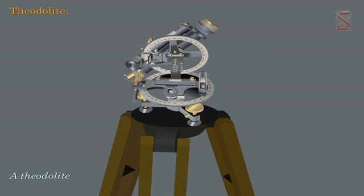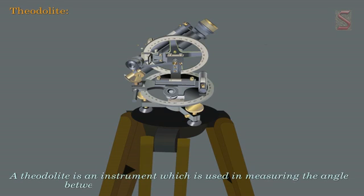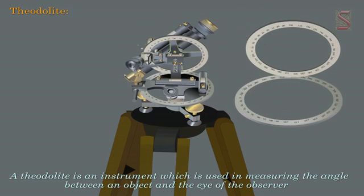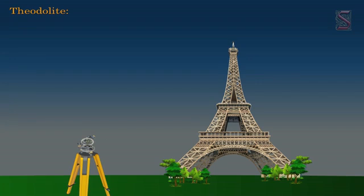A theodolite is an instrument which is used in measuring the angle between an object and the eye of the observer. A theodolite consists of two graduated wheels placed at right angles to each other and a telescope. The wheels are used for the measurements of horizontal and vertical angles. The angle to the desired point is measured by positioning the telescope towards that point, and the angle can be read on the telescope scale.